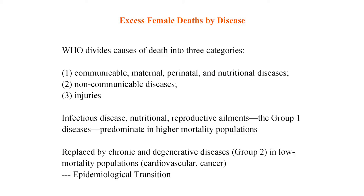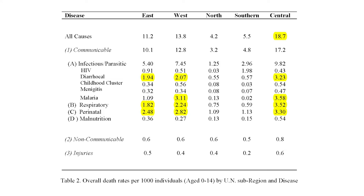We want to see what diseases are responsible. The WHO divides cause of death into three categories: Group 1 — communicable, maternal, perinatal and nutritional; Group 2 — non-communicable disease. In developing countries, everyone dies of Group 1, and as you become more developed you start dying of Group 2 — this is the epidemiological transition. In Africa, everyone's mainly dying from Group 1. Mortality rates for 0 to 14 are highest in Central Africa. The main killers are diarrhea-related diseases, malaria, respiratory infection, and perinatal conditions.